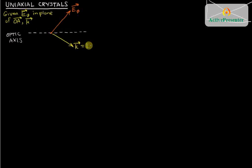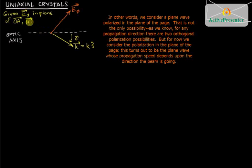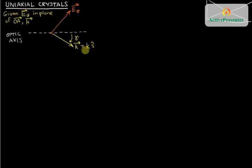For later usage, we break the k vector into a magnitude wave number k and a direction called s-hat, so that we don't get confused between various k quantities. The direction of the k vector is s-hat and its magnitude is k. We define an angle from the optic axis to the k vector and call that angle gamma. The problem is solved if we can find k and the direction s-hat, which is equivalent to finding angle gamma.